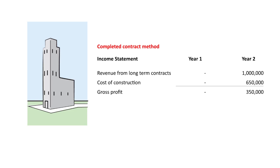At the end of year two, hypothetically say it was a million dollars in revenue. The cost of construction was $650,000, so gross profit would then be reported at the $350,000 amount. All is reported in the year of completion — that's the completed contract method. The building is now done and we will show the revenue, expenses, and profits for that building.